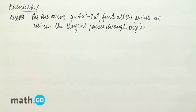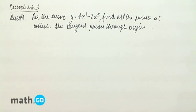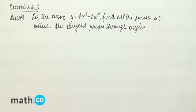Exercise 6.3, question number 18. It says for the curve y equals 4x cubed minus 2x to the power 5, find all the points at which the tangent passes through the origin.